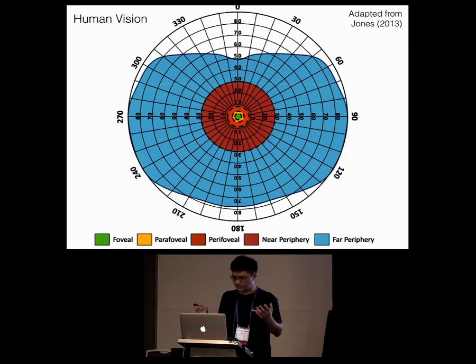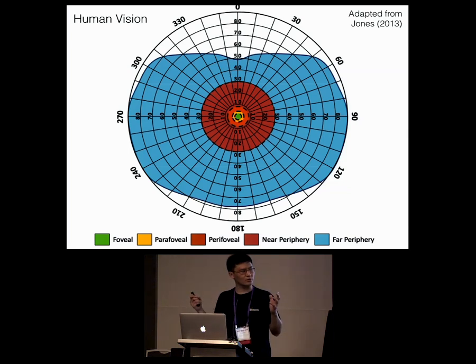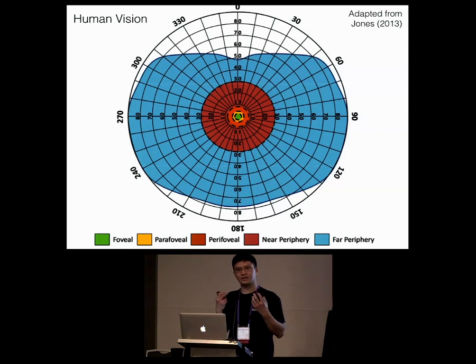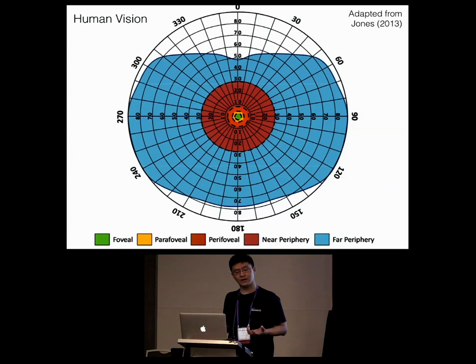The total field of view is around 190 degrees horizontal. When we're out and about in physical reality, the peripheral vision is constantly stimulated by the world around us, providing us with excellent spatial awareness and motion detection.